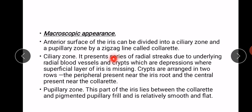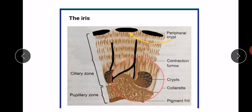The ciliary zone presents a series of radial streaks due to the underlying radial blood vessels and crypts, which are depressions where the superficial layer of the iris is missing. Crypts are arranged in two rows: peripheral crypts present near the iris root, and central crypts present near the collarette.